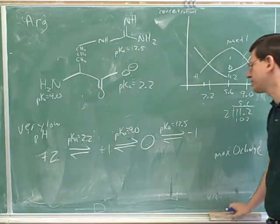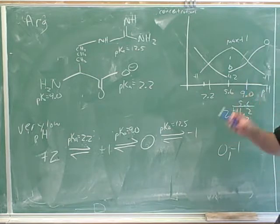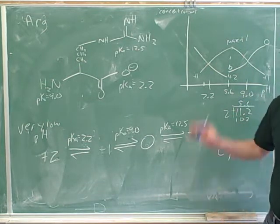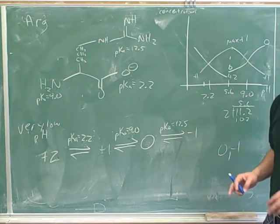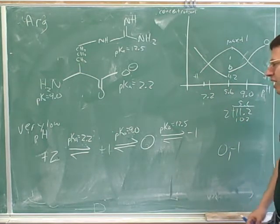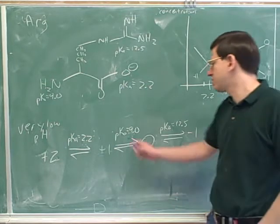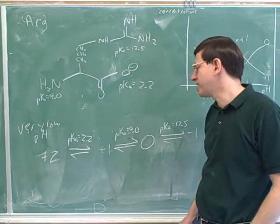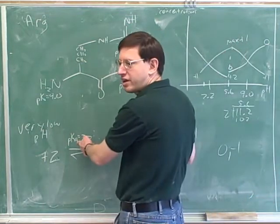If we wanted equal concentrations of the zero and the negative one, we'd use a pH of 12.5. Those are the two types of questions your instructor likes to ask: what pH gives equal concentrations of two adjacent net charges, or what pH gives the maximum concentration of a particular net charge? It's very easy — equal concentrations of adjacent species corresponds to the pKa for that transition. And the maximum concentration of a species is the average of the pKas on either side.